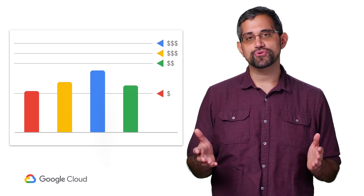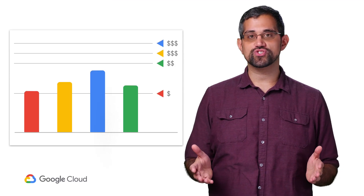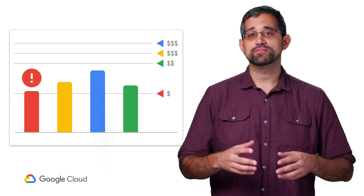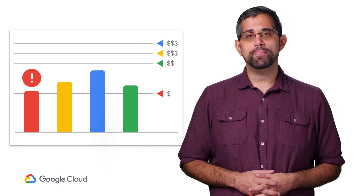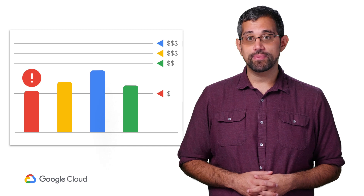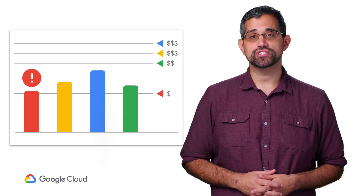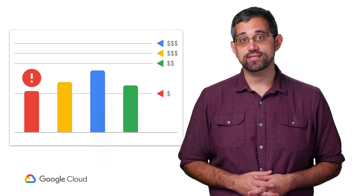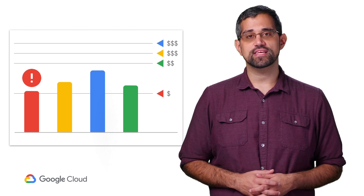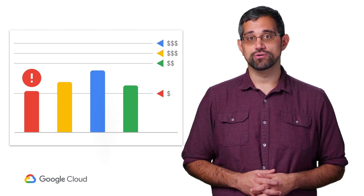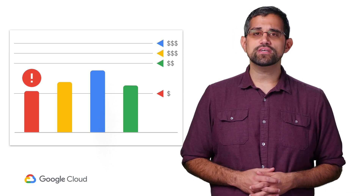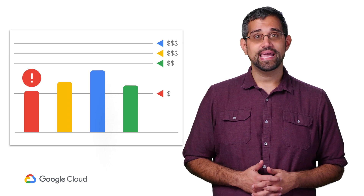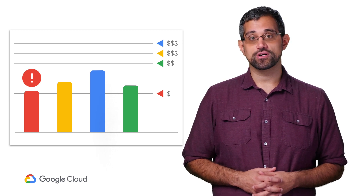Setting a budget in GCP lets you trigger notifications when your costs hit or are forecasted to hit a specified amount. You can set up a budget for an entire billing account or multiple budgets for different combinations of projects and GCP products so that you can stay informed on the areas that matter most to you. Let's look at the interface where you can manage your budgets, set one up, and see what the options for notifications are.